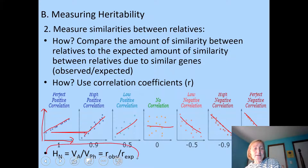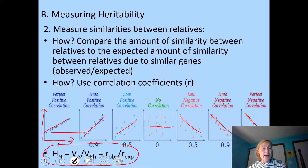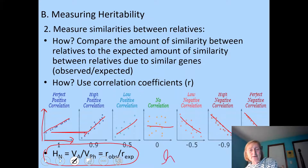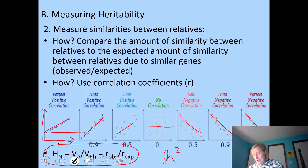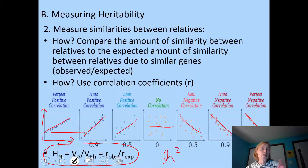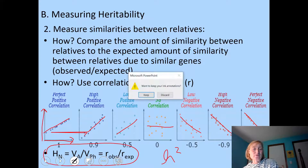We can talk about heritability in the narrow sense, or h-squared, as the proportion of phenotypic variance due to additive genetic effects (VA). We can calculate this using correlation coefficients: heritability equals the observed correlation coefficient divided by the expected correlation coefficient.